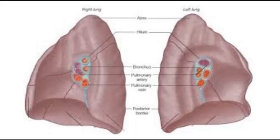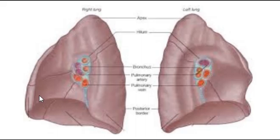Now let's jump to the left lung. The biggest groove on the left lung is the groove for the arch of the aorta. On the right we had the candy-cane azygous vein; on the left we have the large arch of the aorta groove. The aorta is a very big, high-pressure vessel, so you'd expect it to make a very large impression.